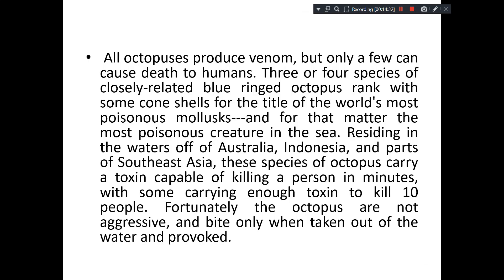All octopus produce venom — they produce toxins or poison. But only a few octopuses produce poison sufficient to kill human brain cells. Most octopus, though they produce venom, the strength is not sufficient to kill a human. Three or four closely related species called the blue-ringed octopus are known as the most poisonous creatures in the sea.